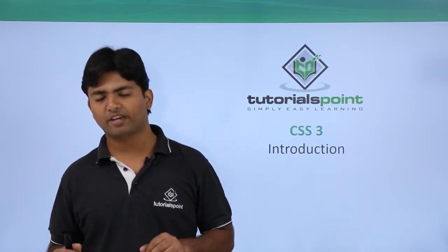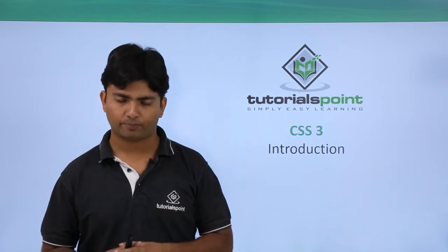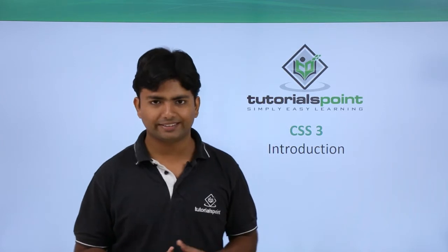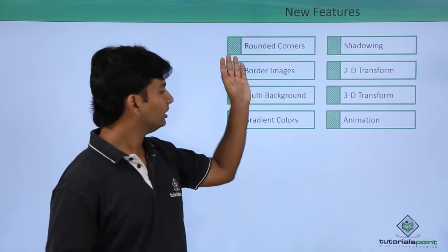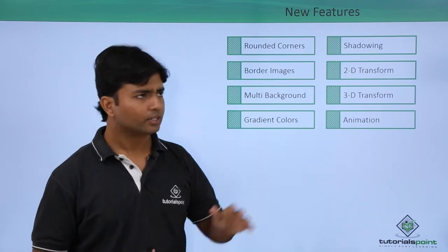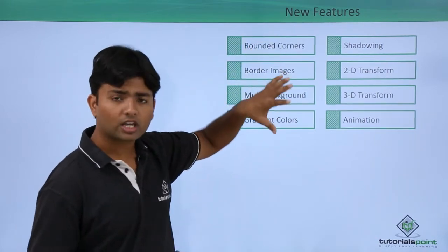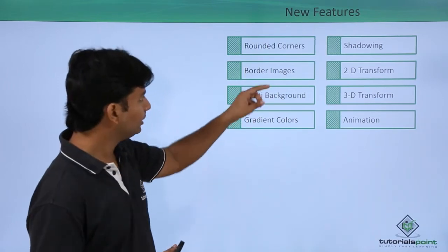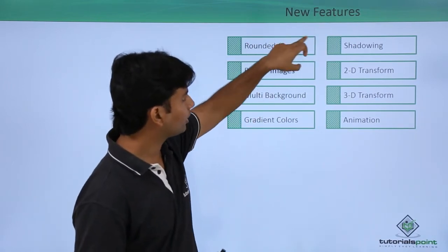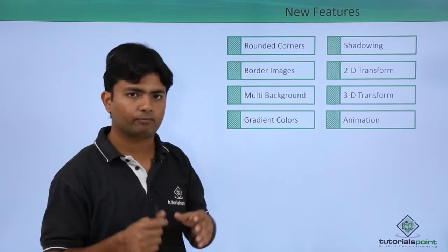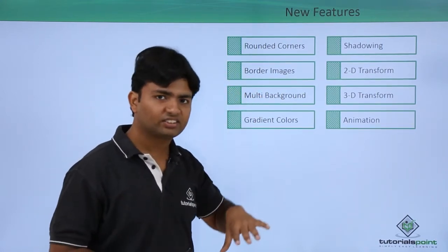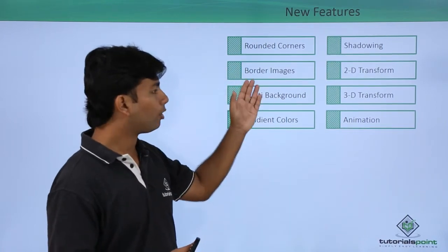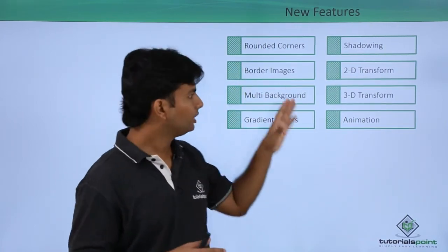It's just that the new features of CSS3 will make your web page more interactive. So let's see what new features are available in CSS3. First is rounded corners — so far we were dealing with strictly rectangular borders, but in CSS3 you can make rounded corners as well. Similarly, border images — so far borders were straight lines with different thickness, dotted, dashed, etc.